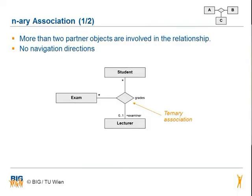Another important concept is the n-ary association. It is needed when more than two partner objects are involved in the relationship. In this case it does not make sense to have navigation directions. The ternary association is between three different classes; in this example the name of the ternary association is 'grades'.